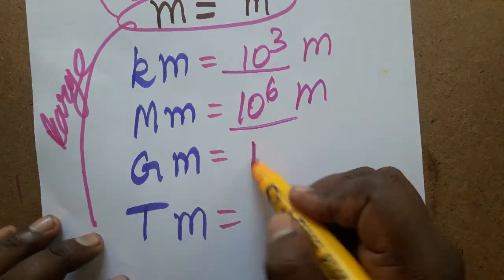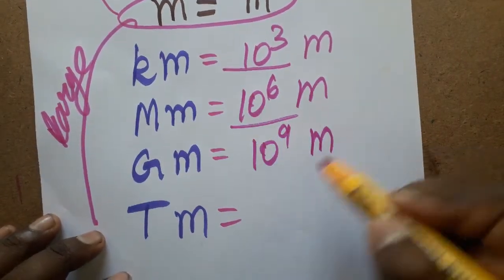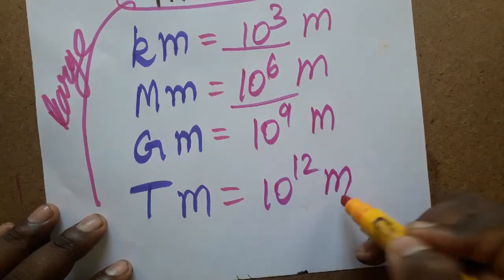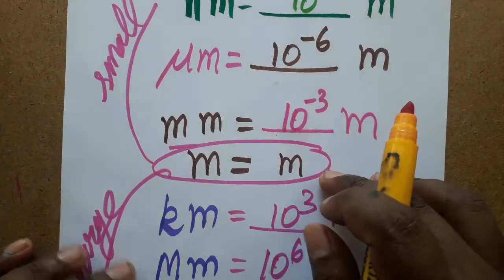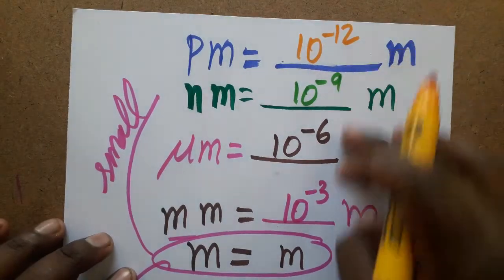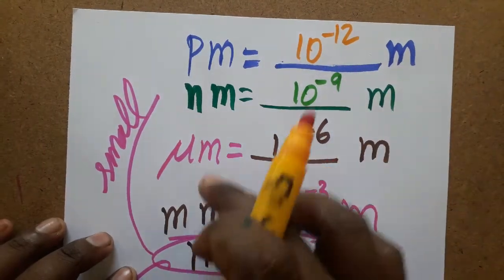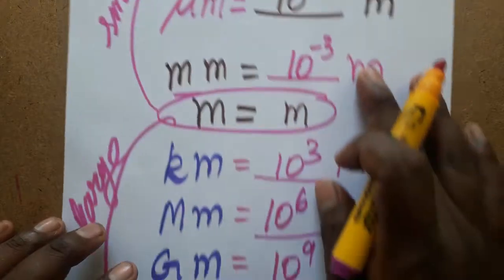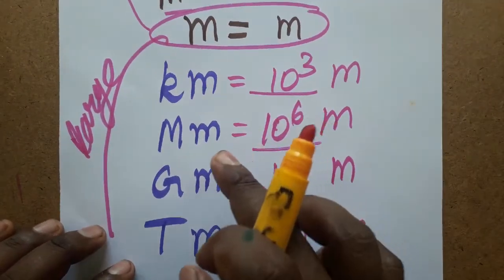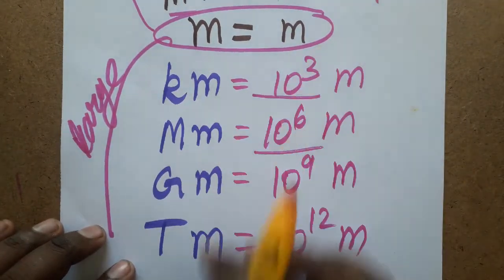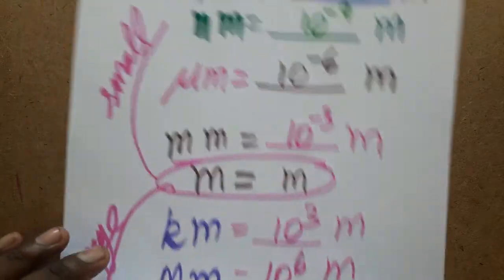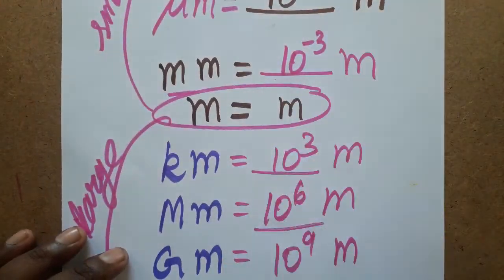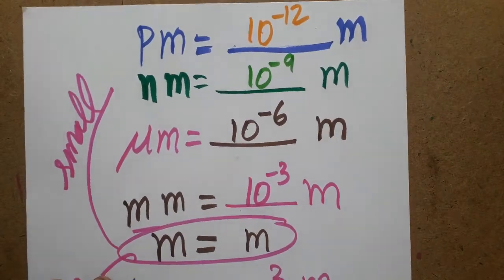Gigameter is 10 power 9 meter, and terameter is 10 power 12 meter. So starting from meter, if you want a small value you can use milli, micro, nano, or pico. For larger values, you can use kilo, mega, giga, or tera. These are the prefix units used to measure small and large values. Thank you.